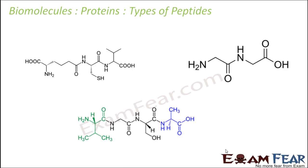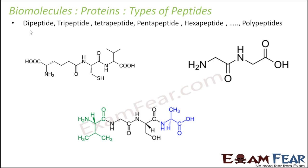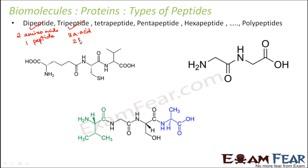Now let us look at the types of peptides. A dipeptide consists of two amino acids joined together by one peptide bond. A tripeptide is three amino acids joined together by two peptide bonds. A tetrapeptide is four amino acids joined together by three peptide bonds. They are called di-, tri-, and tetra- based on the number of amino acids joined together.